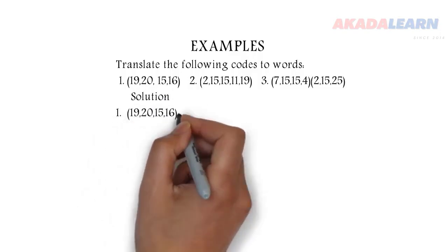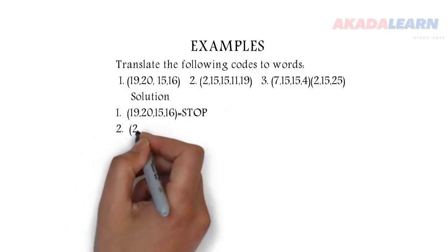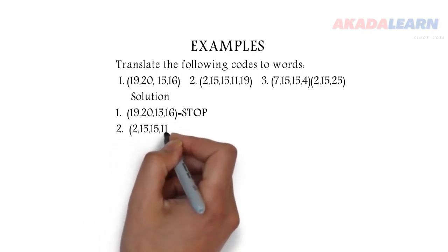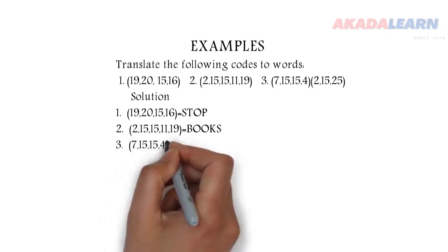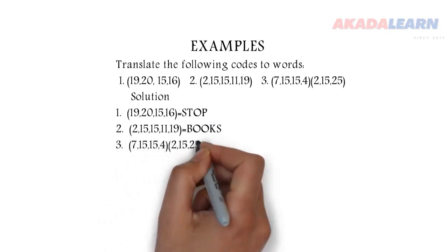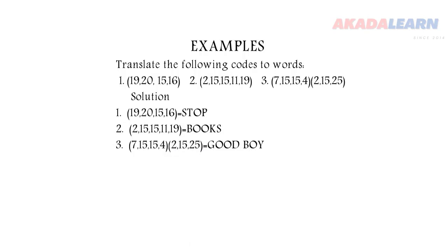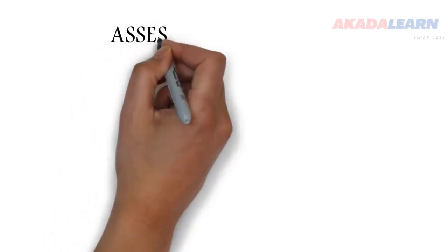So let's see the solution. From the table, you can see that 19 is S, 20 is T, 15 is O, and 16 is P. On the third question, we can see the two brackets. So endeavor to put a space between the words.